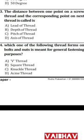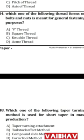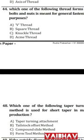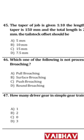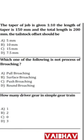Question 44: Which thread form on bolts and nuts is meant for general fastening purposes? The answer is A — V-thread is used for general fastening purposes.